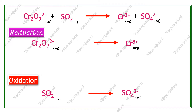The next step is we have to balance the central atoms. In the reduction reaction, the number of chromium atoms is 2, but on the product side only 1 chromium atom is present. So we introduce a coefficient of 2 on the product side. In the oxidation reaction, equal numbers of sulfur atoms — the central atom — are already present.